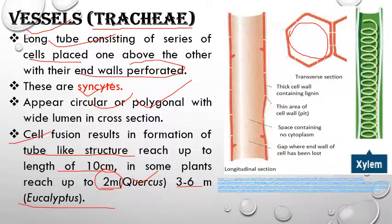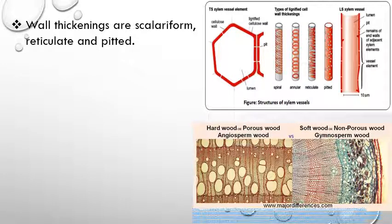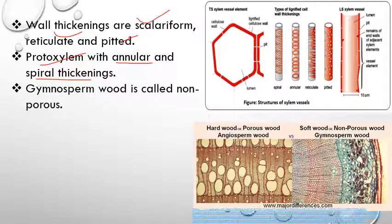In some plants, vessel length can be up to two meters, for example in Quercus (oak). In Eucalyptus, the tallest angiosperm, vessel length can be three to six meters. Wall thickenings in vessels — scalariform, pitted, reticulate, and annular — may all be present. In protoxylem, thickening is initially annular or spiral.